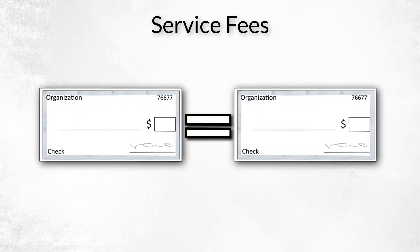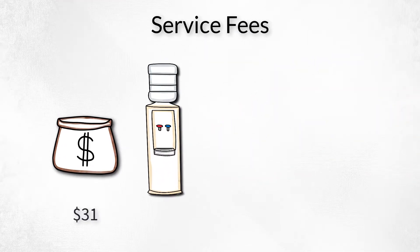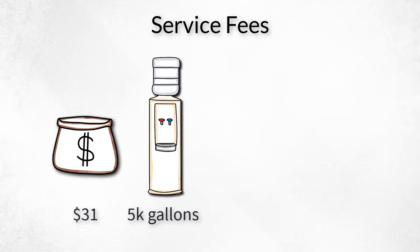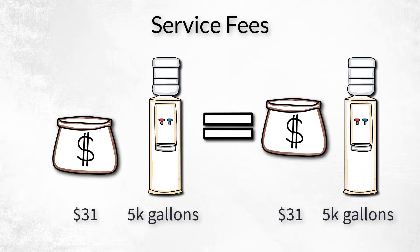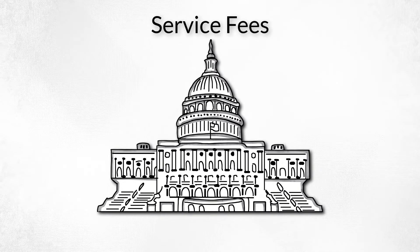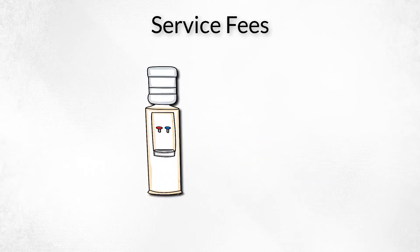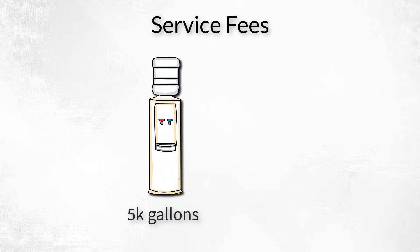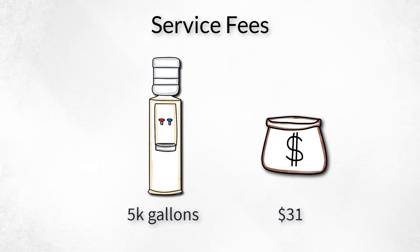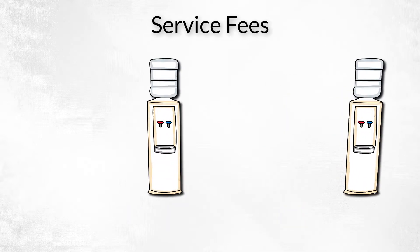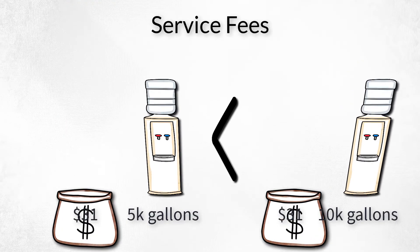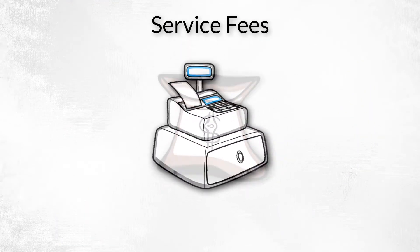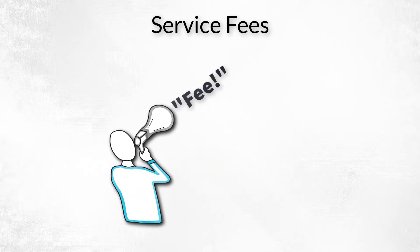Thus, users paying the same fee amount will receive the same benefit. For example, a customer who pays $31 for their monthly water bill will receive the same amount of water as their neighbor who also paid $31. If the government cannot demonstrate a measured, specific benefit an individual customer receives, and benefits provided change between users paying the same fee amount, the fee is likely illegitimate and is actually a tax — regardless of the term used.